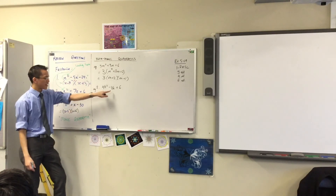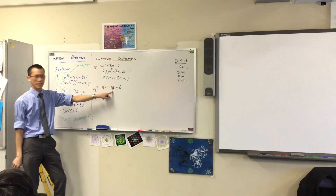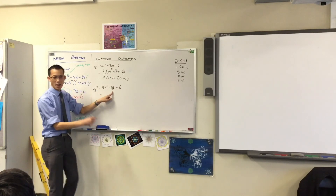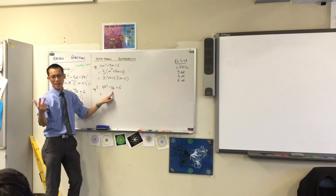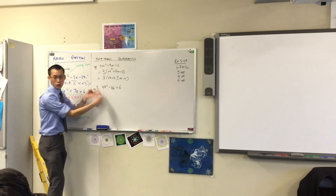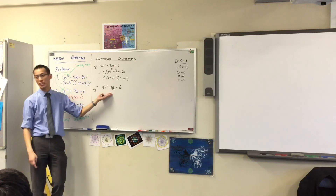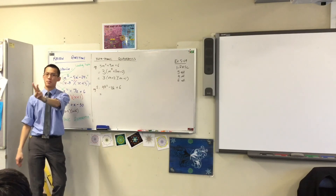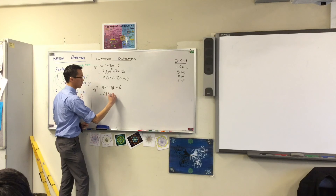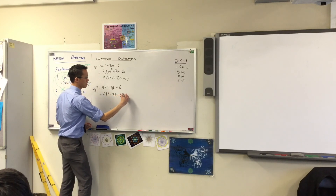I am going to take this middle term and break it into two pieces. Minus 11k — this is like writing minus k, eleven times. I can group them up in any way I like. Right now they're in one group; I'm going to split them into two, for reasons that will become clear in a minute.